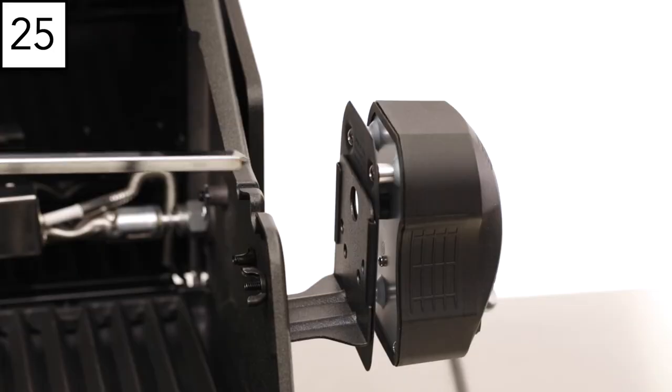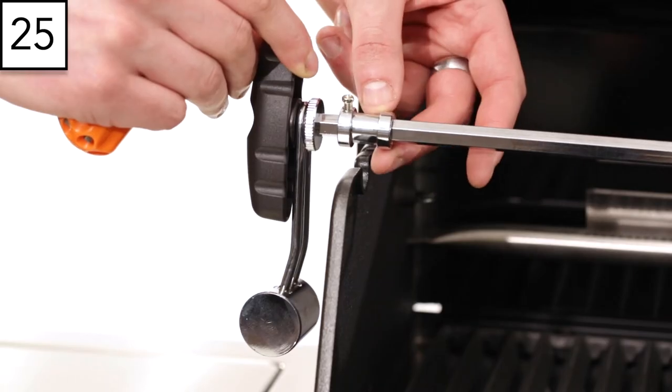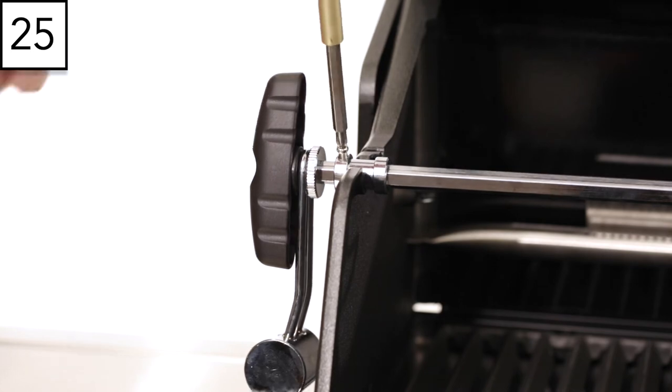Install the assembled rod onto the grill with the open end going into the motor. Now use your screwdriver to tighten the set screw.